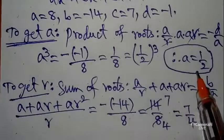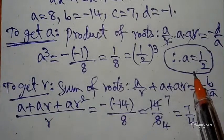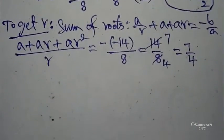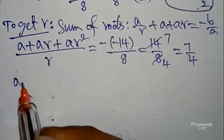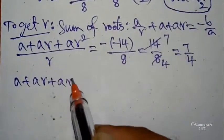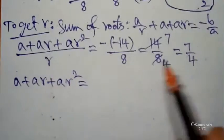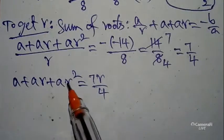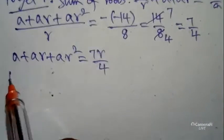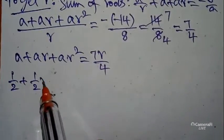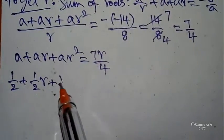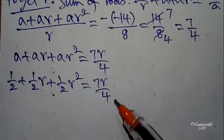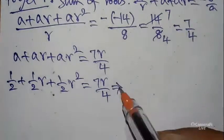Substituting a = 1/2: a/r + a + ar = 7/4 becomes 1/(2r) + 1/2 + r/2 = 7/4. Taking 1/2 as common on the left side: (1/2)(1/r + 1 + r) = 7/4.